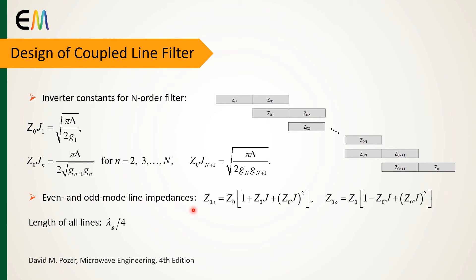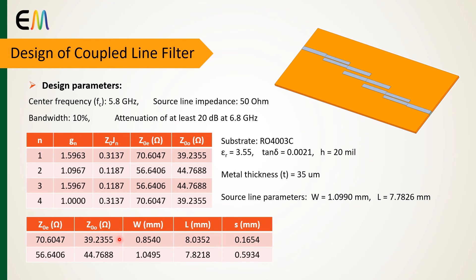After that, even and odd mode line impedances are computed using these two equations. It is worth noting that the length of each line is the quarter of lambda g, which lambda g is the wavelength that is propagating in the microstrip line.